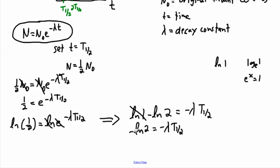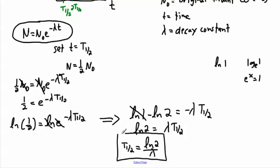I can multiply both sides by negative one, so the negatives disappear. Then solving for t one-half, I divide both sides by lambda to get t one-half equals ln two divided by lambda. This is a derivation a physicist might struggle with, but with these math skills, we can totally do it. It tells you exactly how the half-life is related to the decay constant.